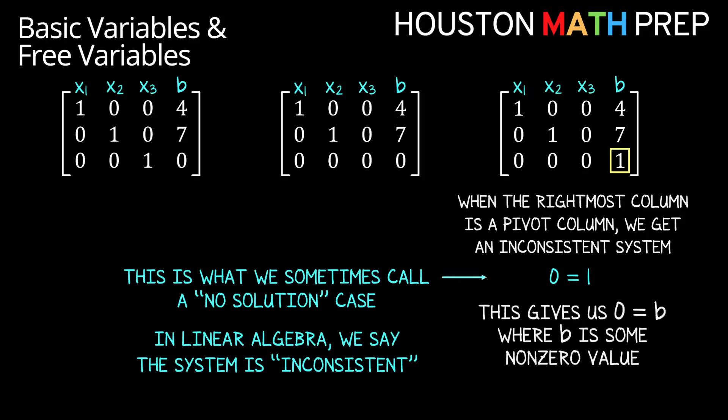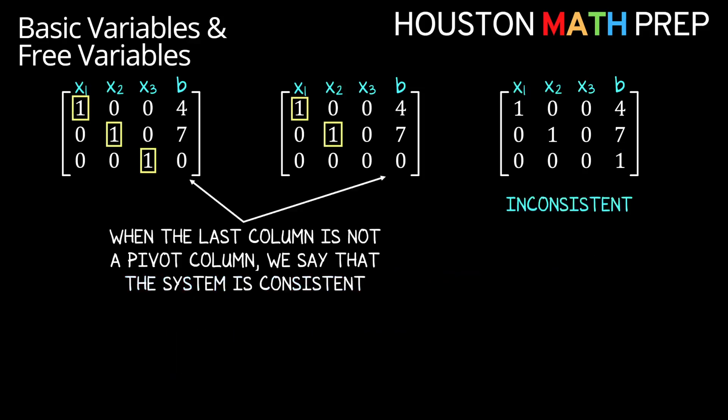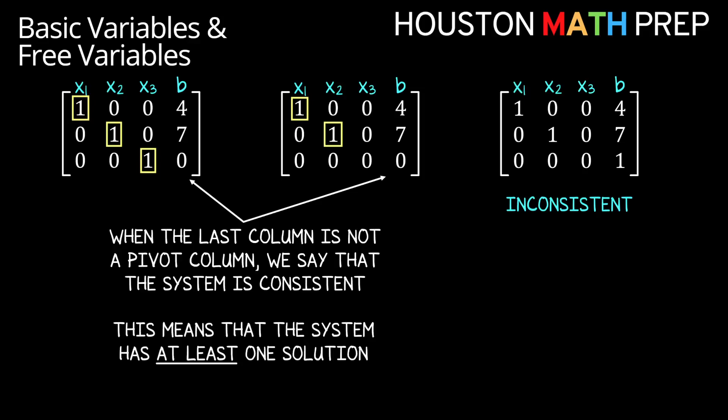Now, if our augmented matrix does not have a pivot column in its last column, then our system has at least one solution. It could have one solution, it could have many solutions, but there's at least one, and we call that system consistent.